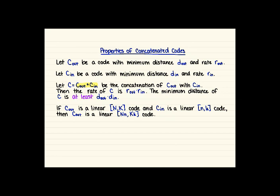So we've got the concatenation of those two codes. Then it turns out we can find the rate of the concatenated code really easily by just taking the product of the rates of the outer code and inner code.